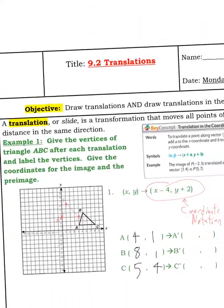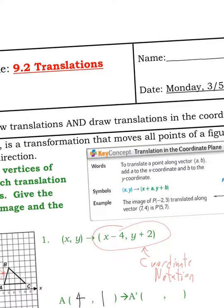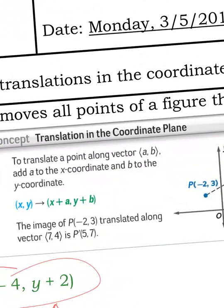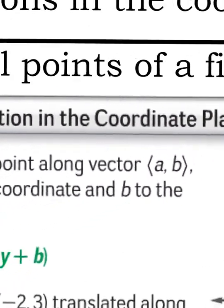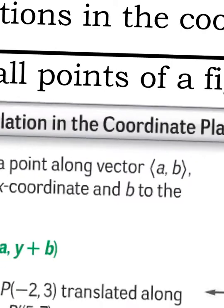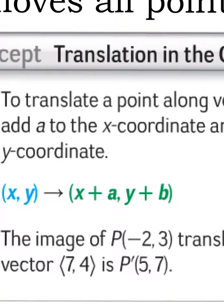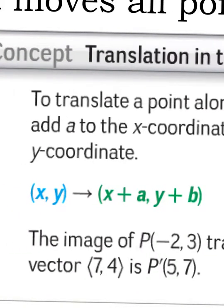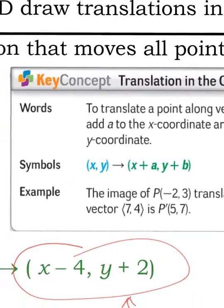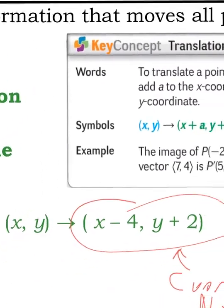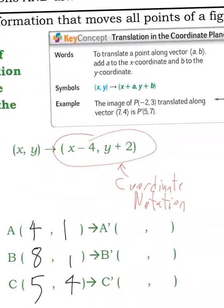And to save time I've kind of pre-graphed some things so I'm just going to talk you through what I did. But if you see, let's talk about how you see things written. If I say translate something along a vector, say vector AB, it's going to be with those angular looking brackets. Other times I might say translate it like this and it says x plus a would be some number, y plus some number. That would be coordinate notation.